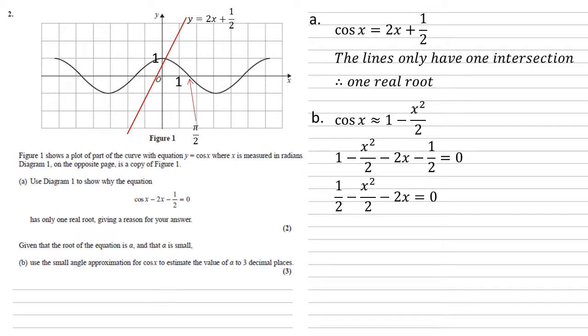Bringing the 1 and the minus one half together gives us one half minus x squared over 2 minus 2x equals zero. Multiplying through by 2 to get rid of the fractions, we get 1 minus x squared minus 4x equals zero.